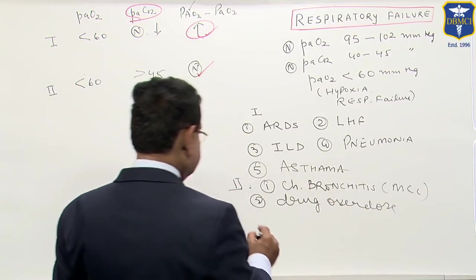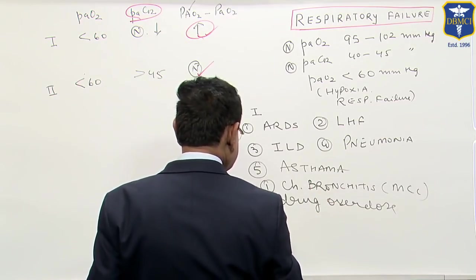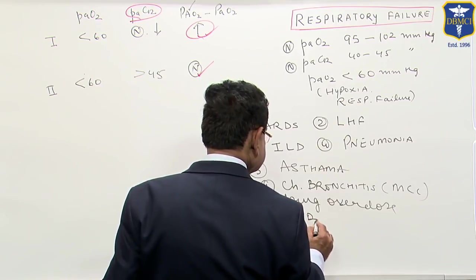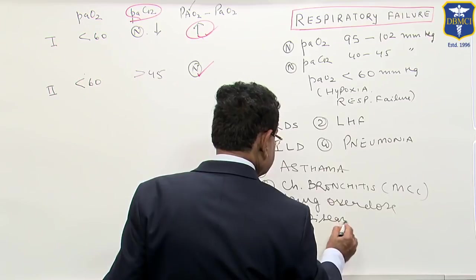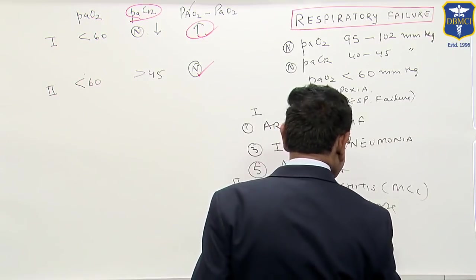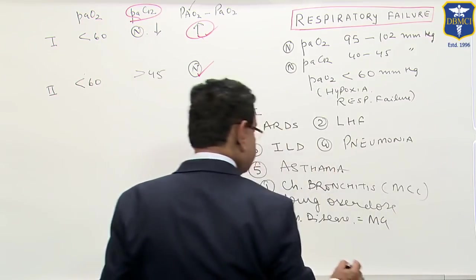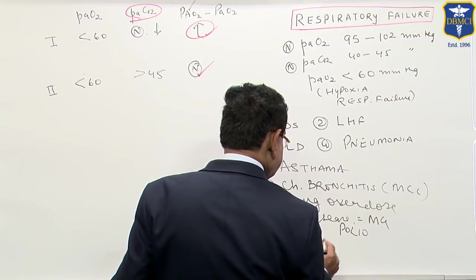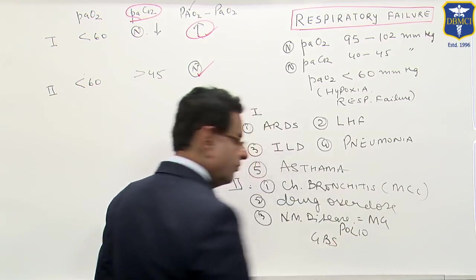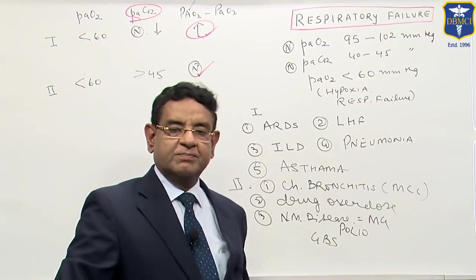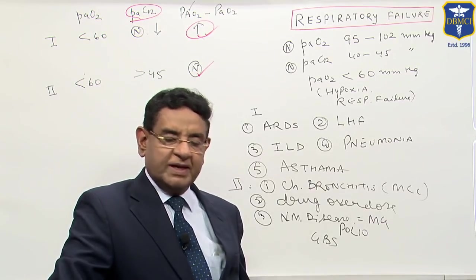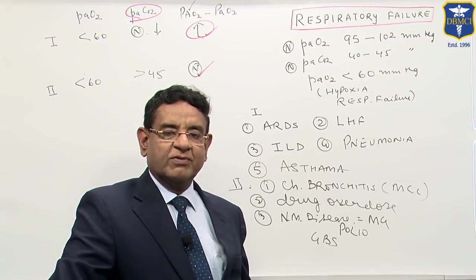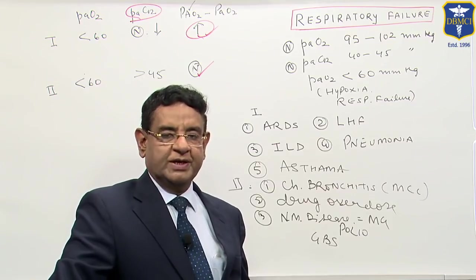Third is neuromuscular disease like myasthenia gravis or muscle disease like polio or Guillain-Barre syndrome where the patient has motor paralysis or may affect diaphragm. So any muscular disease where respiratory muscles are involved can lead to type 2 failure.